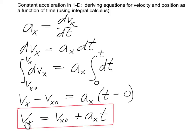To sum up, the x component of the velocity at time t is equal to the initial x velocity component at time 0, plus how much the velocity changes from time 0 to time t.